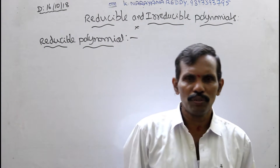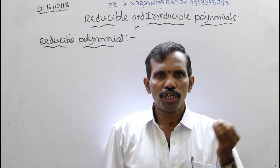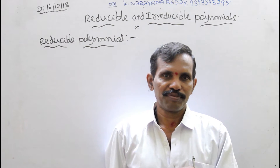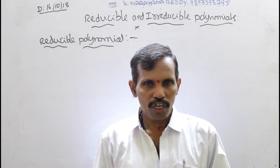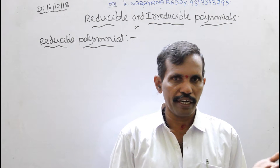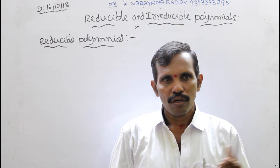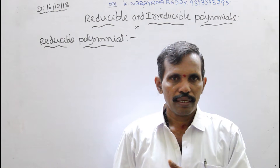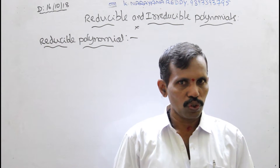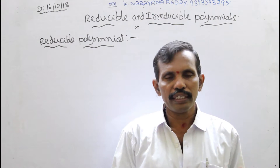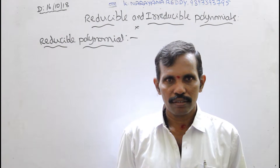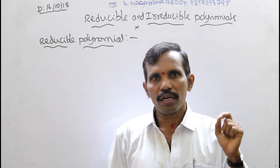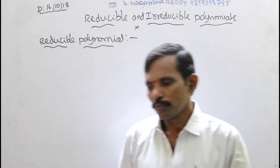Reducible polynomial — reducible means decreasing, degree-decreasing. Suppose a polynomial containing degree 3, we can reduce it to degree 1. Similarly for degree 4 or degree 2, we can reduce it to degree 1. That means you can express a polynomial f of x as the product of two or more polynomials — it is called a reducible polynomial.